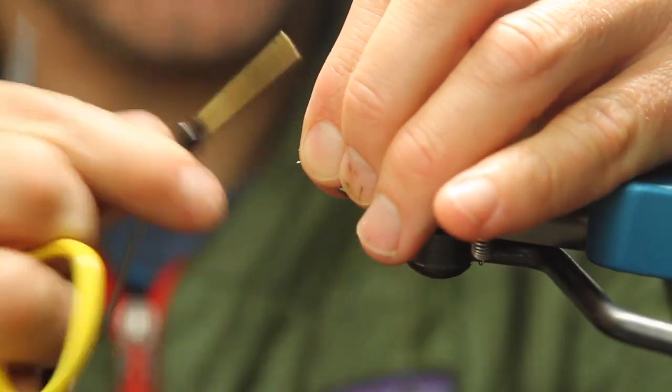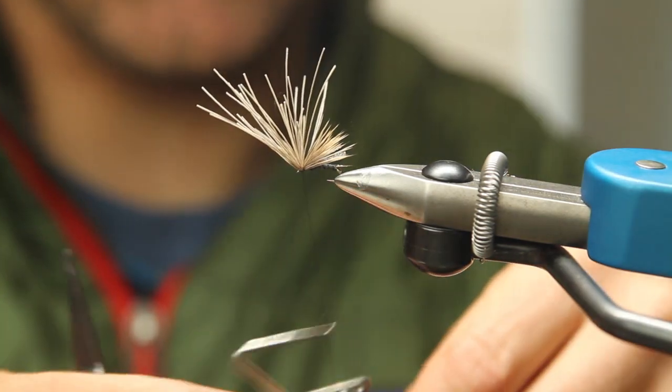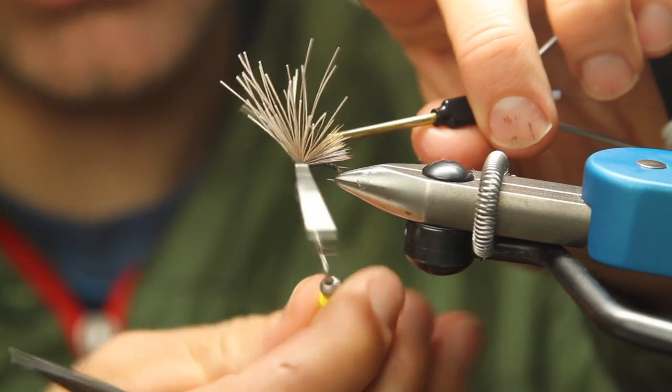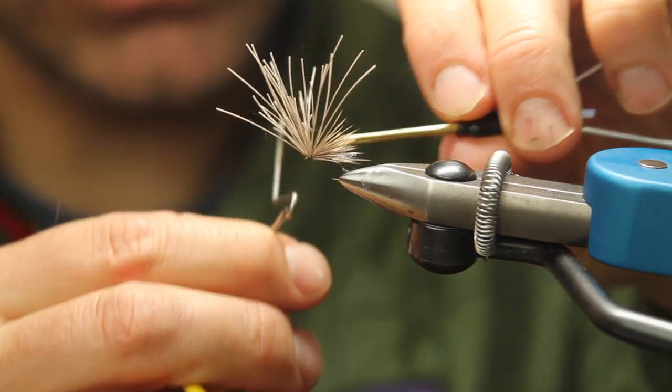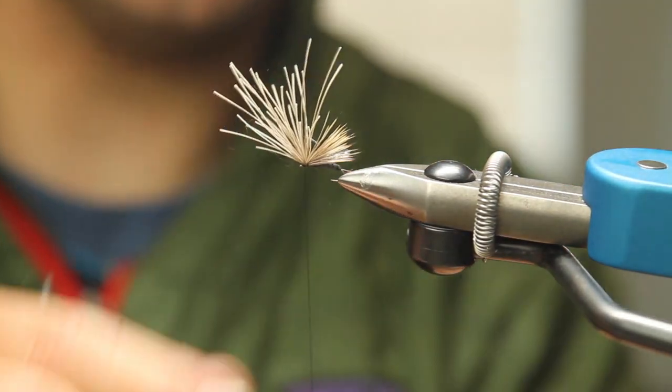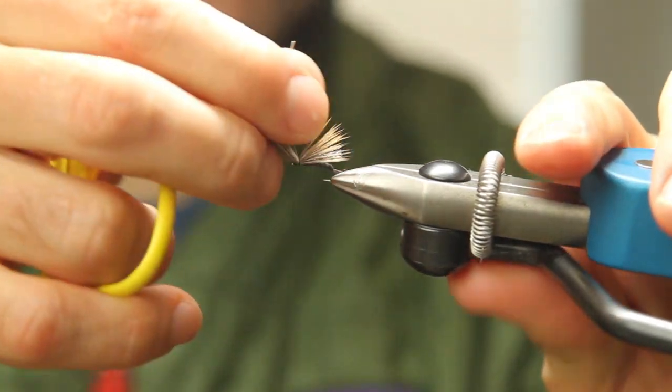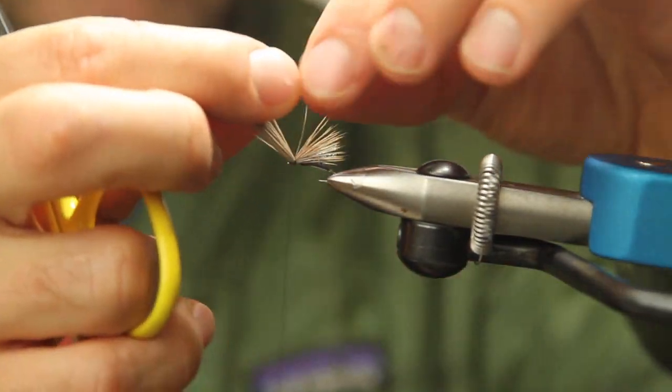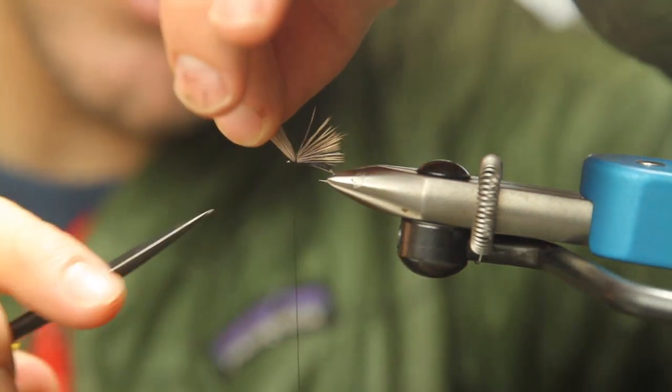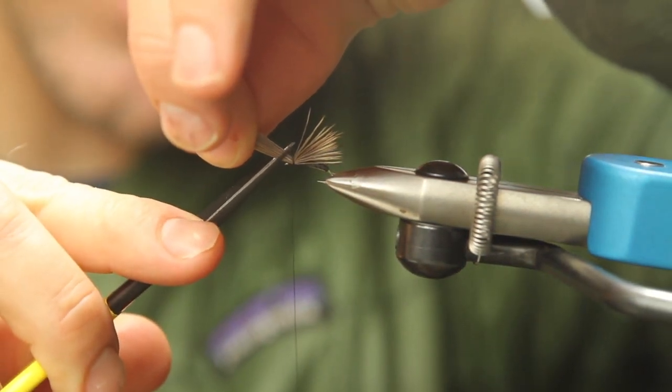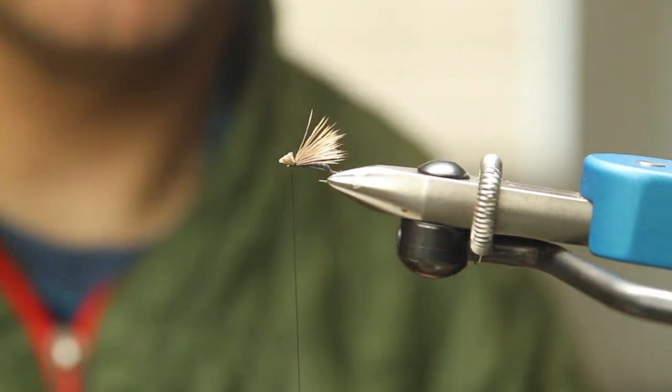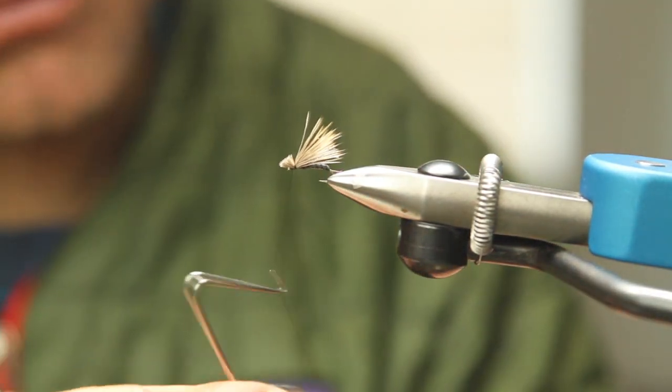This is a great spot to throw in a whip finish. Just like an easy one or two turn whip finish. A placeholder I'll call it. Now, hopefully you guys can see this. We're going to grab all these butts here. We're going to come in here and trim this at an angle like that. Looking good. Got a little flat top on there.